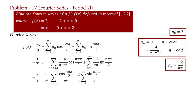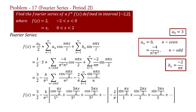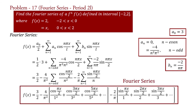Expanding it, we get f(x) equal to 3 upon 2 minus 4 upon pi squared into bracket, taking n equal to 1, 3, 5 and so on. Therefore we get cos(pi x upon 2) upon 1 squared plus cos(3 pi x upon 2) upon 3 squared plus cos(5 pi x upon 2) upon 5 squared and so on. This is the required Fourier series of the given function.